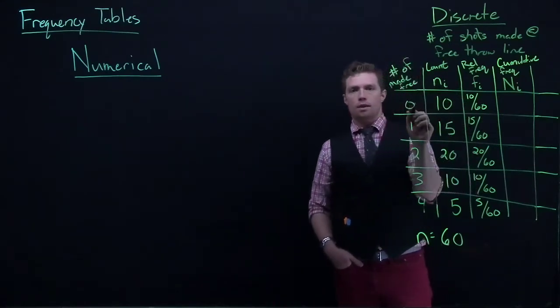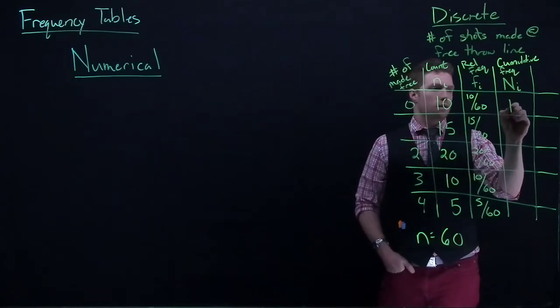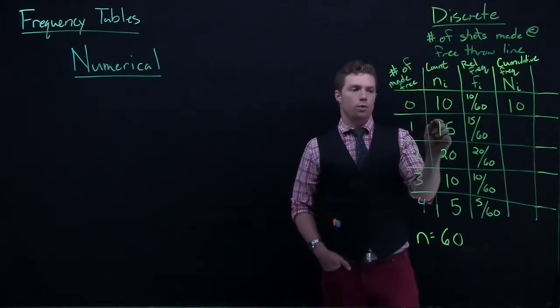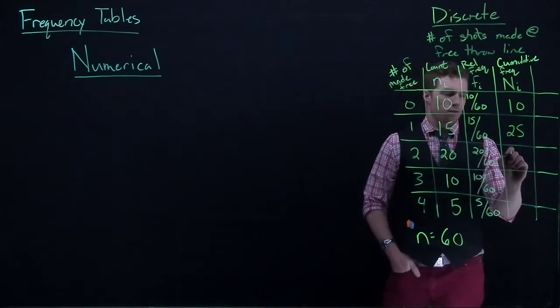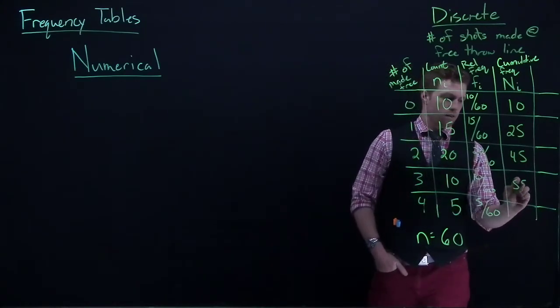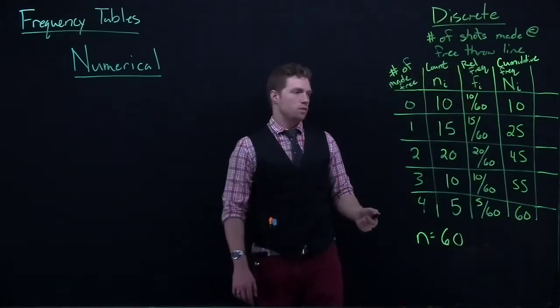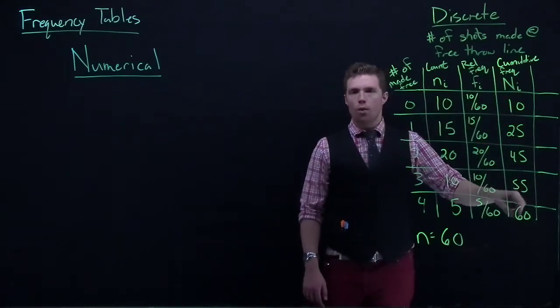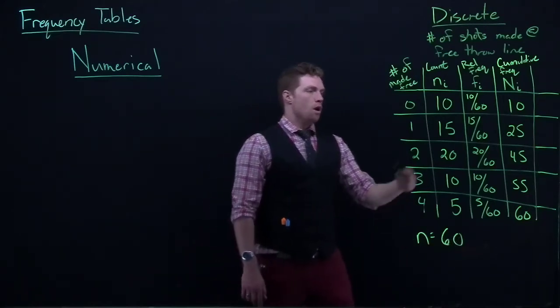So here, how many times did he make zero free throws or fewer? That would be 10. And then how many did he make one free throw or fewer? That would be 25. Two or fewer? That would be 45. Three or fewer? That would be 55. And four or fewer is equal to 60. So the handy thing about this is that if you've done it right, the cumulative frequency, or our capital N, sums all the way up to our sample size. So it's a handy check that you can do.